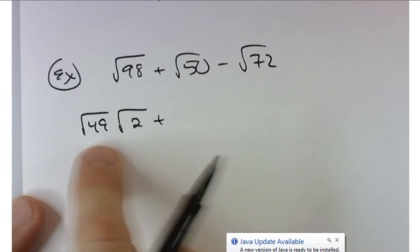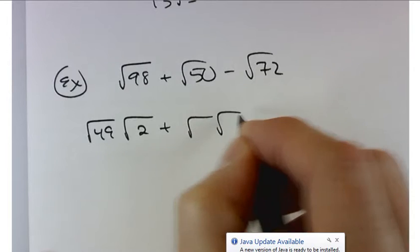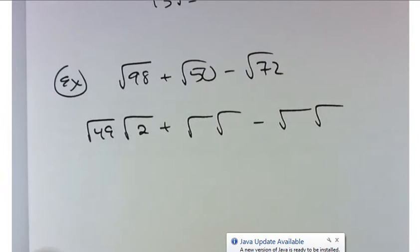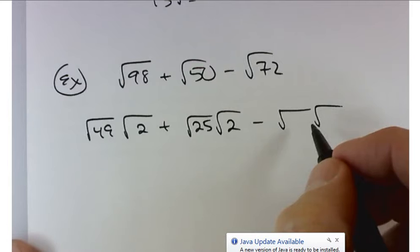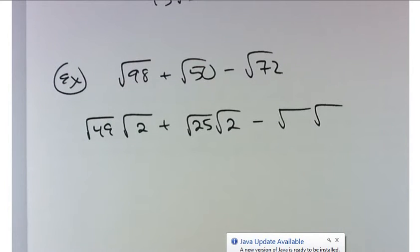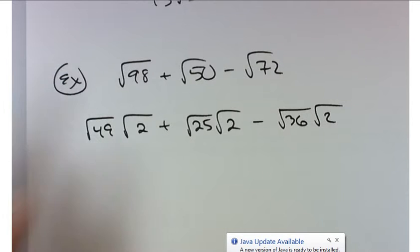So the first one is square root of 49 times 2. How about 50? What perfect square goes evenly into 50? 25 times 2. Good. And last but not least 72. What number from our list over there goes into 72 evenly? 36. Thank you. With that we can rewrite each of these.